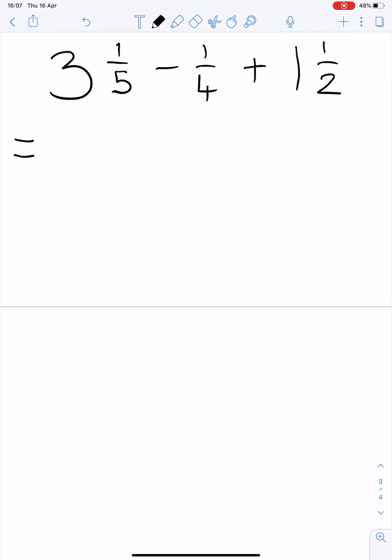We need to have like denominators. 5 and 4 both fit into 20. 2 also fits into 20. So I think that would be a good denominator to choose. 5 times by 4 we must do the same to the top. 4 times by 5 we do the same to the top. 2 times by 10 we must do the same to the top.